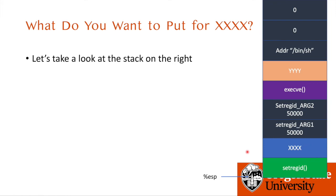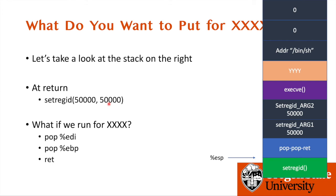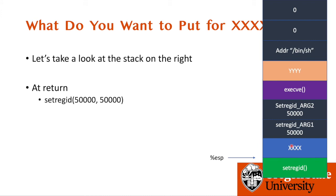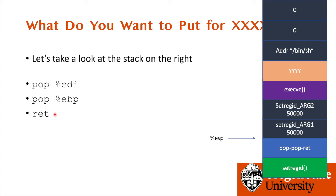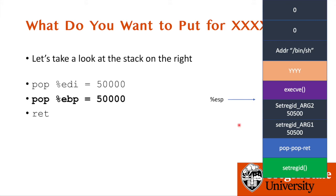Let's take a different approach. Suppose we configure the stack as follows: we want to run setregid with arguments 50000, 50000 first. But instead of putting execve as the return address of setregid, what if we put the address of three instructions: pop EDI, pop EBP, return? Just follow the execution. So it will first pop EDI — EDI value will be 50000 — and then pop EBP — EBP value will be 50000.